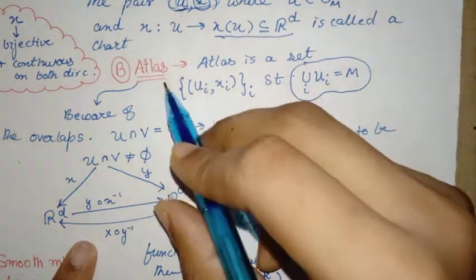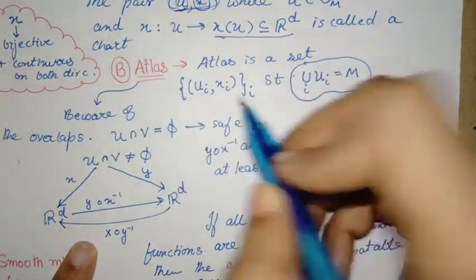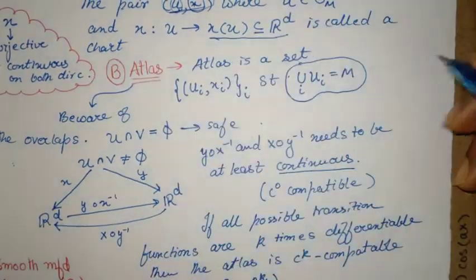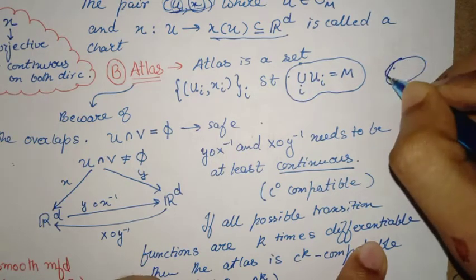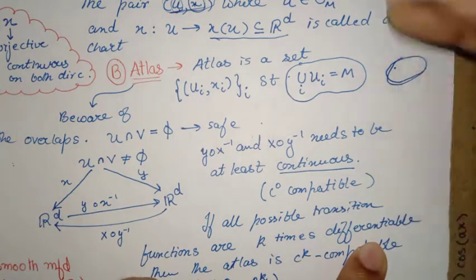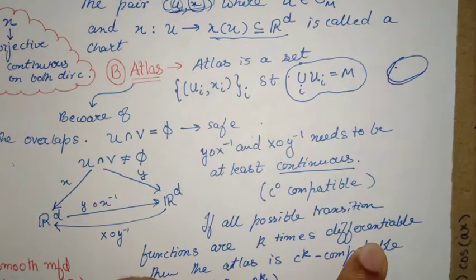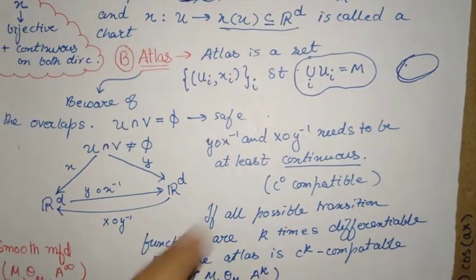Now given charts, you can collect all the possible charts such that you completely characterize your manifold. Then that entire thing is called an atlas. It's similar to the atlas that we study.